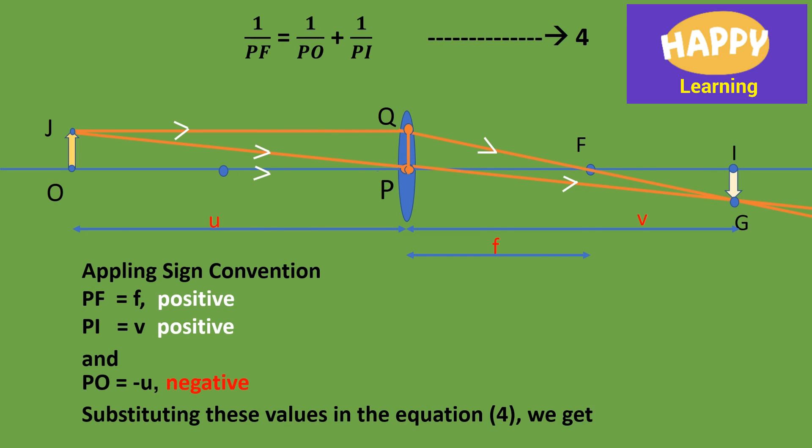So applying the sign convention. PF distance from P to F is positive, so plus F. PI distance from P to I is positive, therefore plus V. And distance from P to O, P to O is negative, therefore minus U. Based on the direction of incident rays, we are deciding the positive or negative sign of these measurements. Substituting these values in the equation 4, we get: